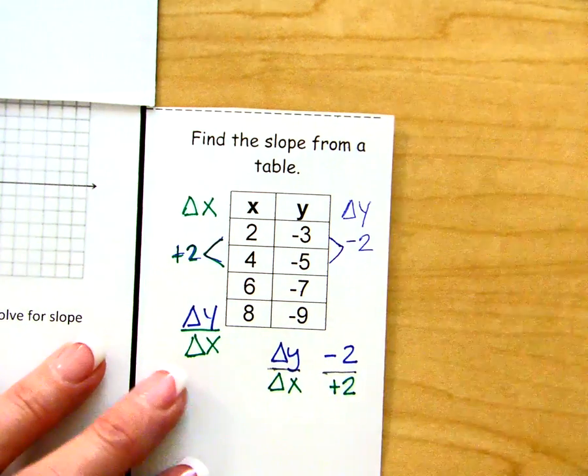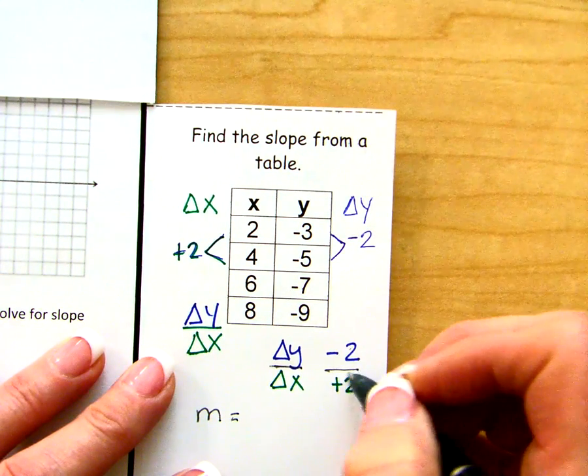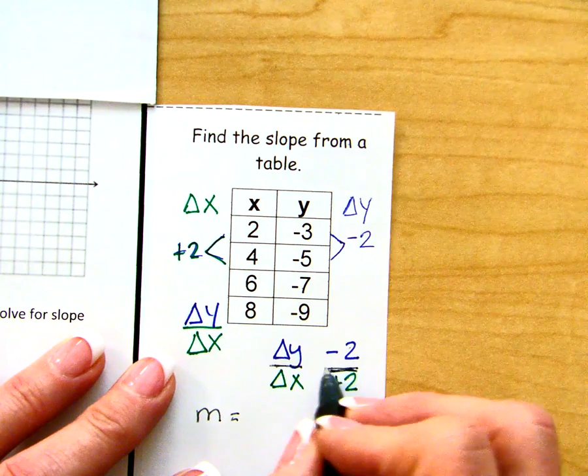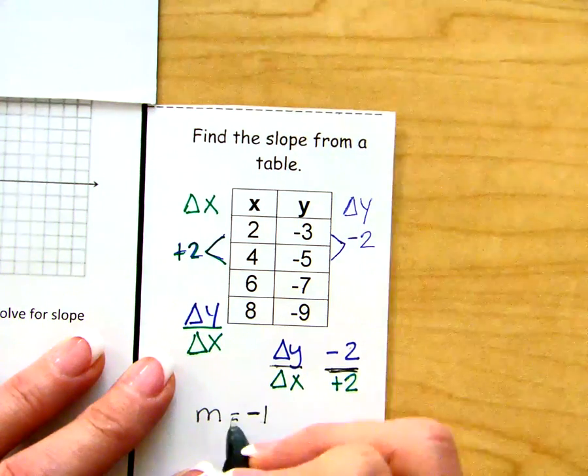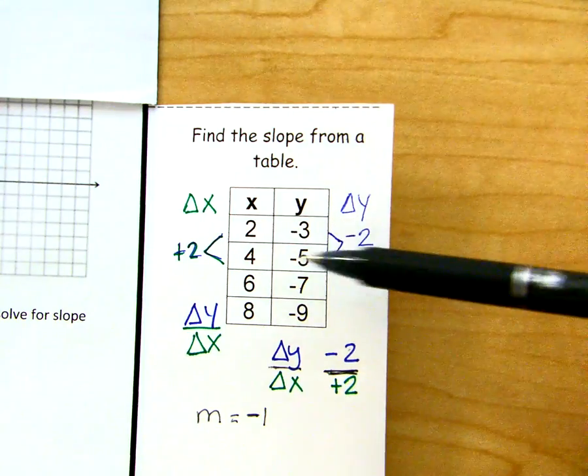So if we simplify now, we find out that our slope is negative 2 divided by positive 2, which is negative 1.